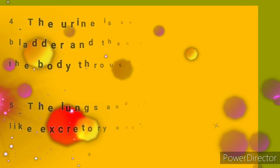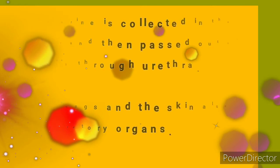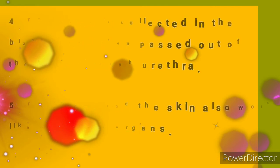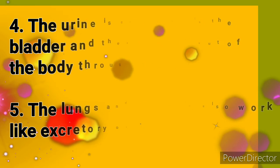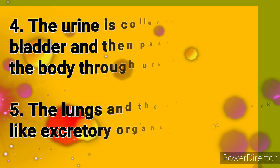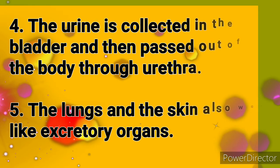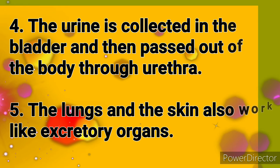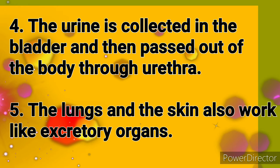The urine is collected in the bladder and then passed out of the body through the ureter. The lungs and the skin also work as excretory organs. Lungs throw out bad air as waste, and skin releases waste water in the form of sweat.